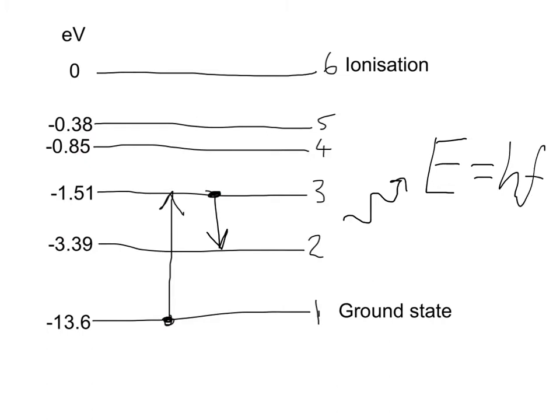By conservation of energy, the energy that photon has taken away from the atom must equal the energy it has lost. So hf must equal the difference between the two energy levels. We can say hf equals E3 minus E2 to find the difference between the two.